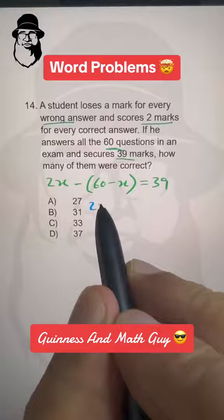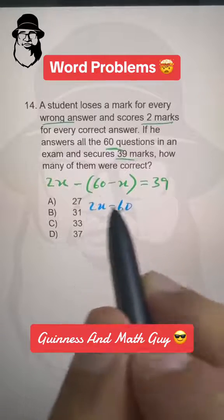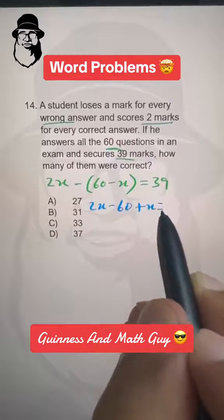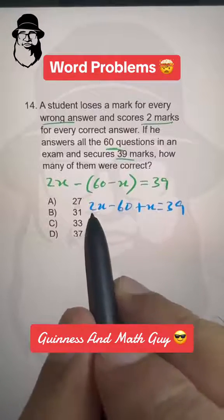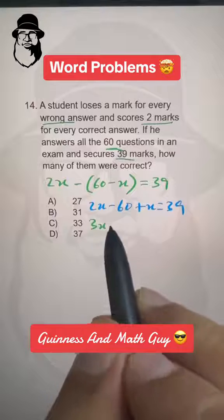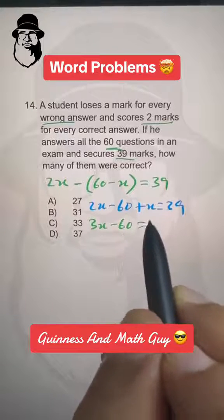Now, 2X minus 60, minus minus becomes plus X, is equal to 39, and we add like terms. 2X plus X is 3X minus 60 equals 39.